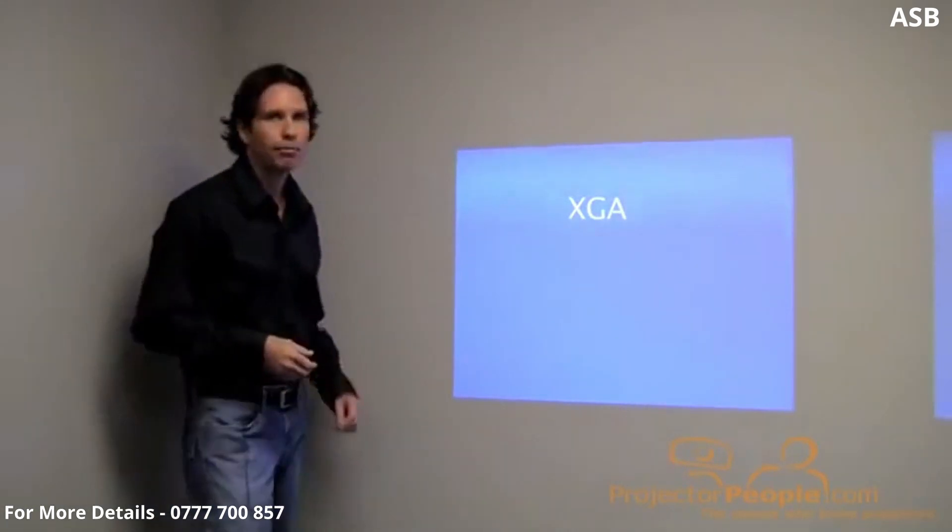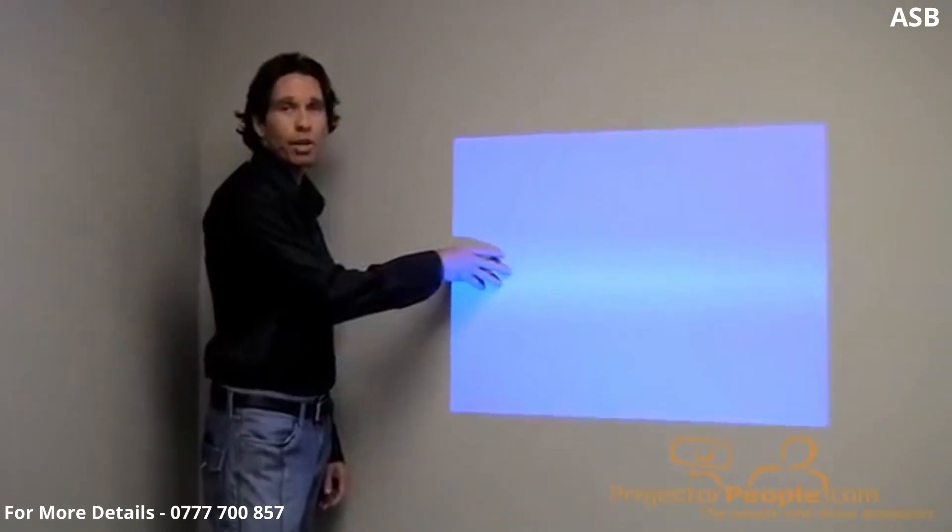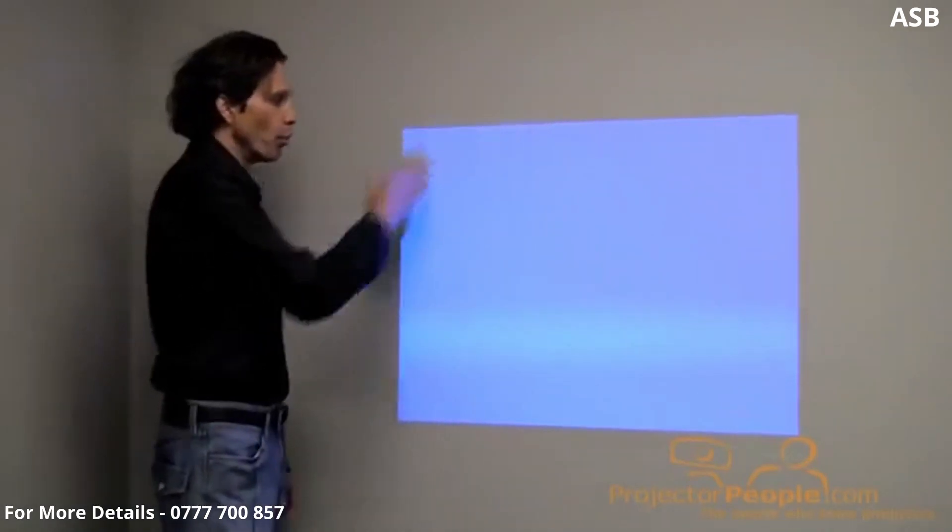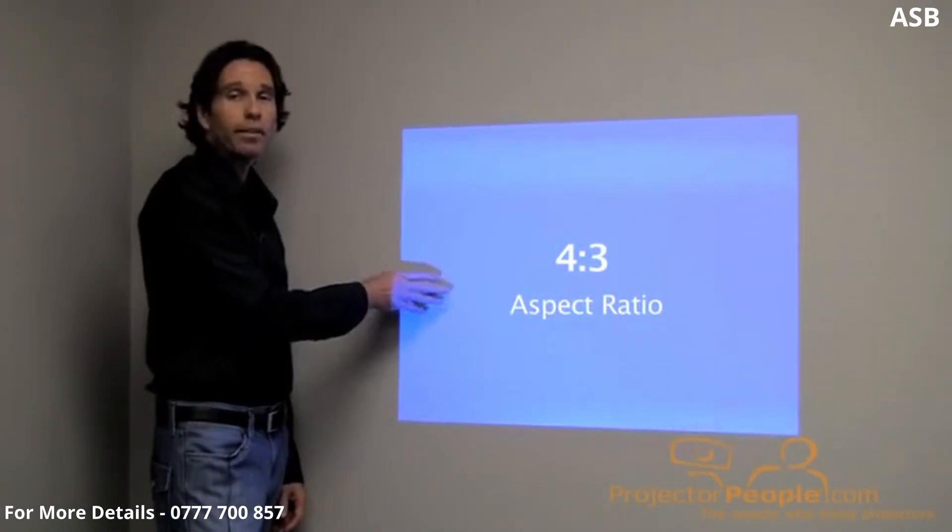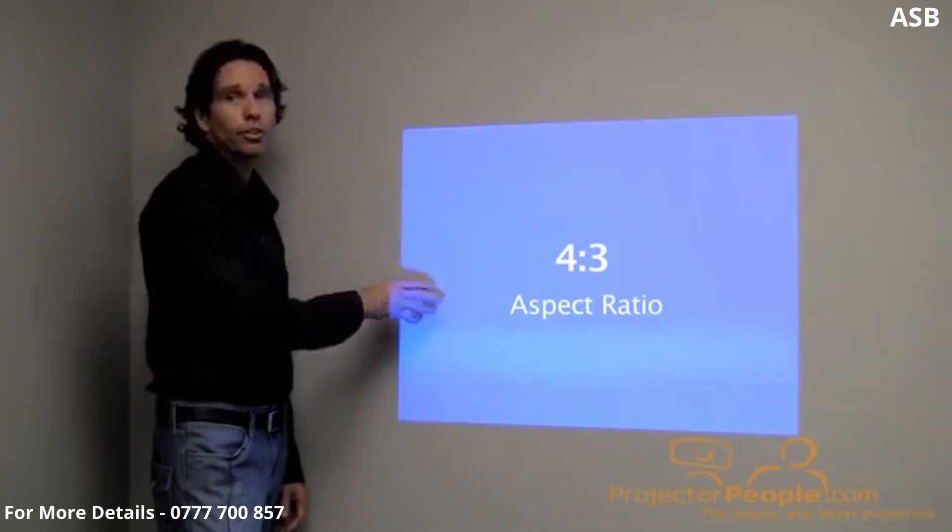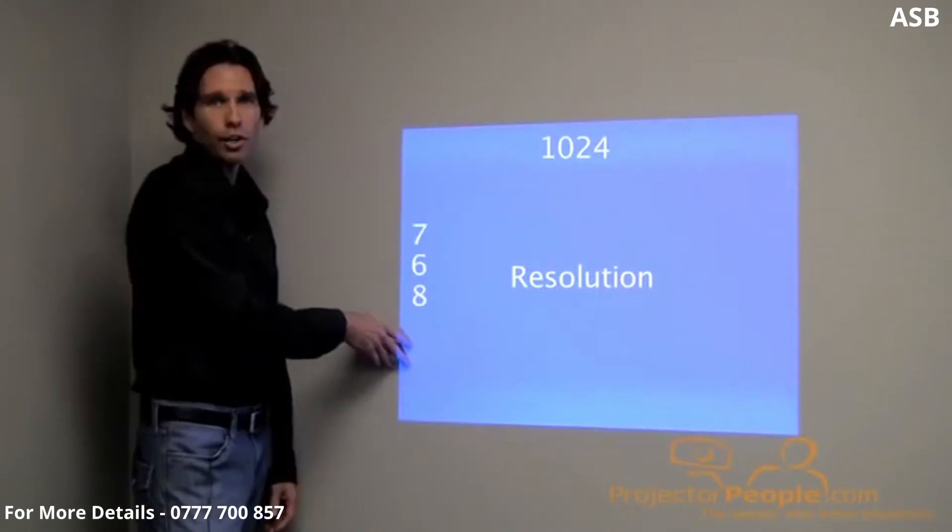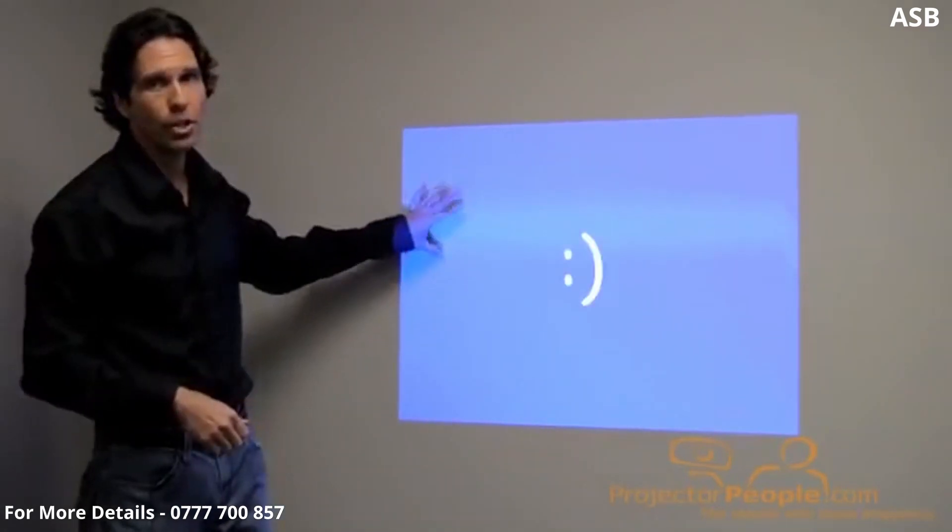The first one is XGA. As you can notice, it's almost a square. It has an aspect ratio of 4 to 3. Just think about a square as 4 to 4. This is a 4 to 3 aspect ratio. This is the oldest resolution we'll talk about and the lowest resolution, but still has a good place in the market. The resolution is 1024 by 768 pixels. This resolution is still great for business applications, church applications, PowerPoint, MediaShout, anything like that.